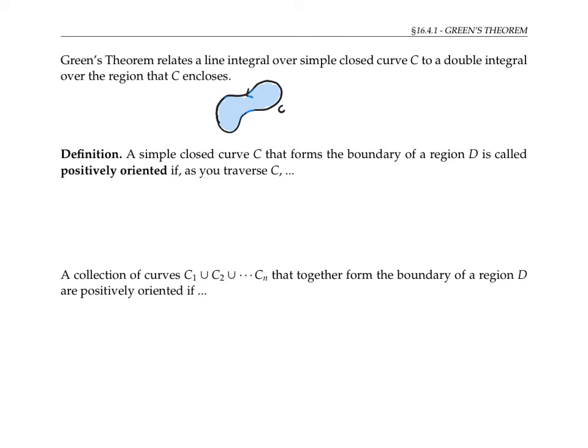Recall that a simple closed curve—closed means that the curve starts and ends at the same point, and simple means the curve doesn't intersect itself. So a simple closed curve is the kind of curve that would enclose a region of the plane.